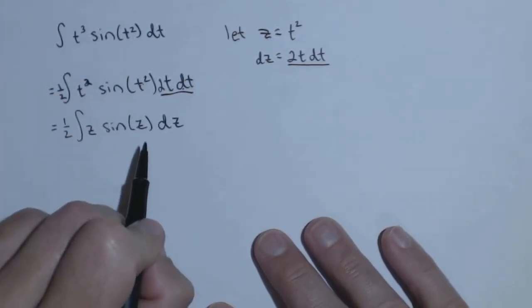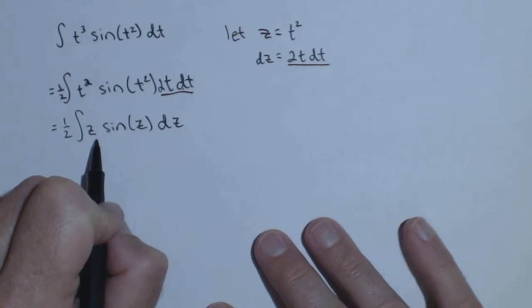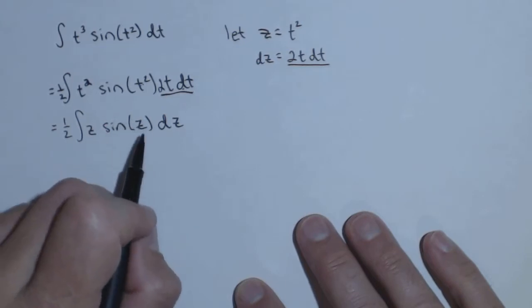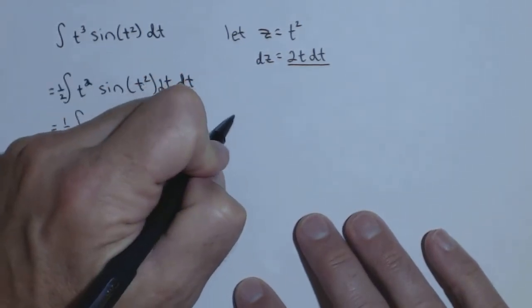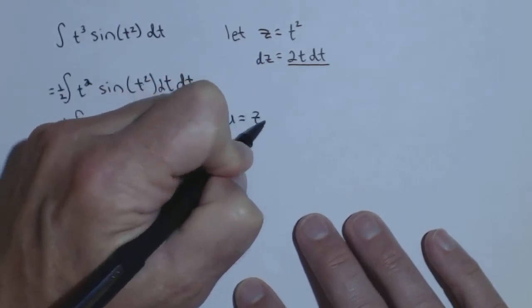And now we have an integral all in terms of z that's actually not too bad of an integration by parts problem. This is one of our straightforward ones, because this part we can get rid of by making it u. This part, whether we're taking the derivative or the antiderivative, stays pretty much the same, it's always going to be a trig function, so I'm going to let u be the z.